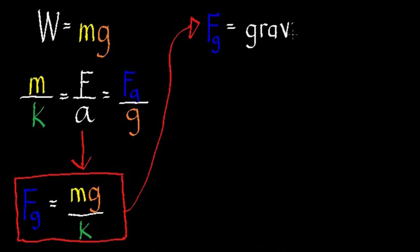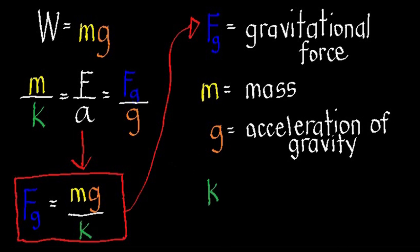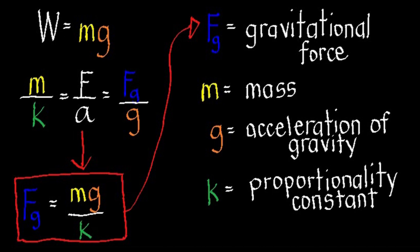Where Fg stands for gravitational force, m is mass, g is the acceleration due to gravity, and k is the proportionality constant. From the formula W equals mg, only k was added. K has the same numerical value as g, but it is not the acceleration of gravity. Rather, k is a proportionality constant used to facilitate the use of Newton's second law of motion.